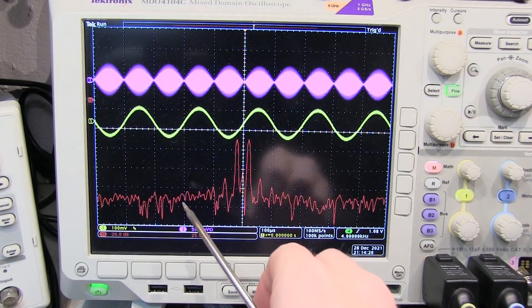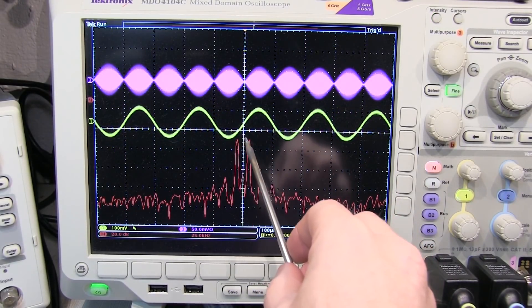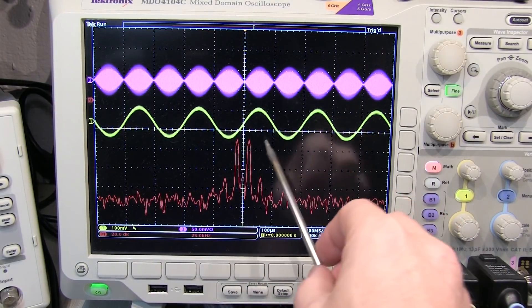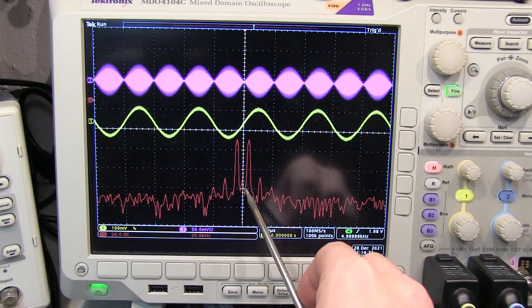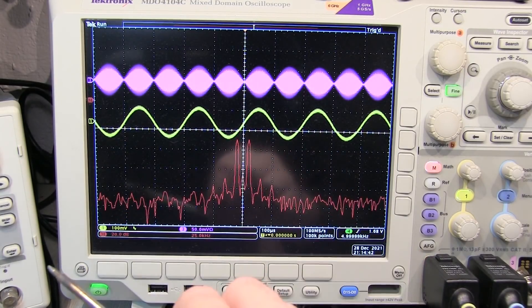If we look at the frequency domain content using the FFT, we can actually see the upper and lower sidebands of the baseband signal. In this case, it is 5 kHz. So that's plus or minus 5 kHz around the carrier, which is suppressed. It's about 20 dB per division. So that carrier is down about 40 dB.